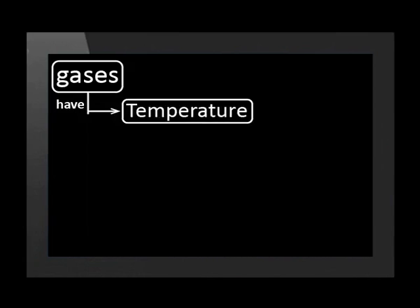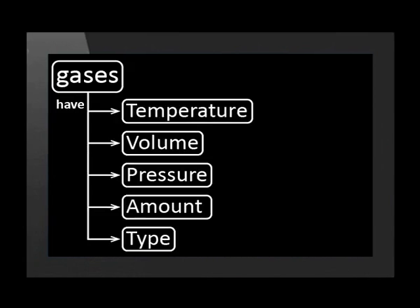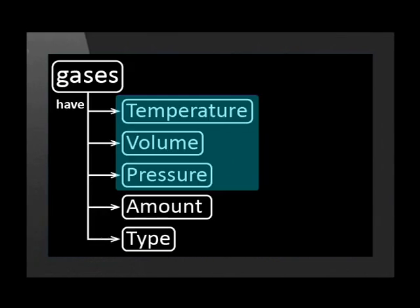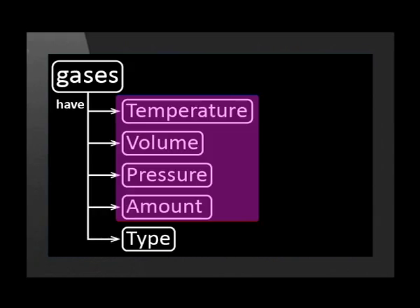Since all gases behave in a very similar way, it is true to say gases have similar properties. Therefore, we can investigate how these properties affect gas behavior. The measurable properties are temperature, volume, pressure, amount of gas, and type of gas. Type of gas does not affect temperature, volume, and pressure. So to start with, we will only focus on these four properties.